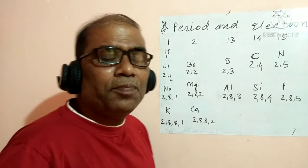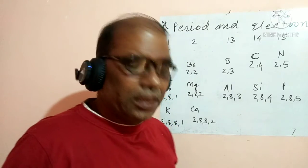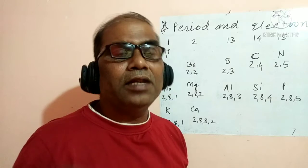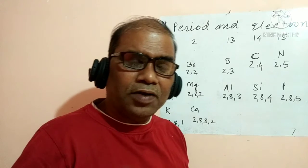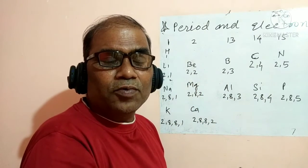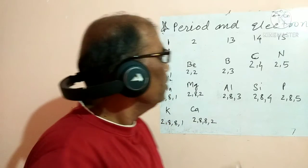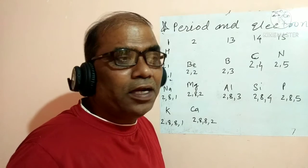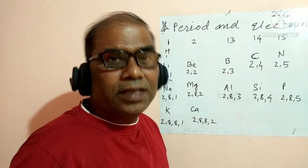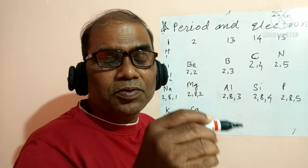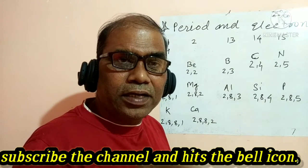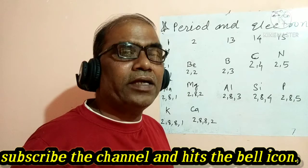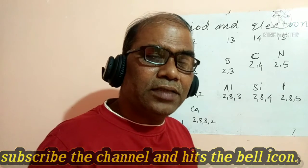To summarize: the chemical properties of elements are determined by their electronic configuration. The number of valence electrons determines the group, and the number of shells determines the period. The characteristic properties of a group are created by the shared valence electron count.